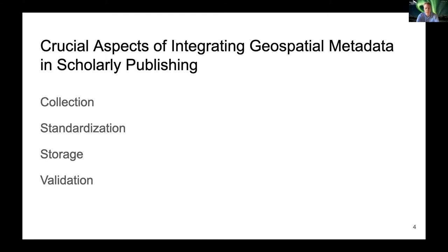Third, the data has to be stored adequately to make it usable and accessible for a broader user group. It is important to ensure that an appropriate database is available that is capable of storing geospatial data, and that the data are stored in such a way that the potential of the data can be exploited. Fourth, a validation is worth considering to verify the validity of the data. Validity checks as part of the peer review process should be considered. Although peer review can be extended by this, a check by another person besides the author is quite reasonable. As there are automated approaches to collect the geospatial metadata, they can also be used for validation.